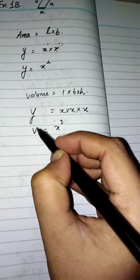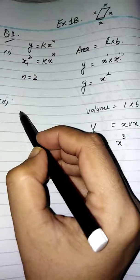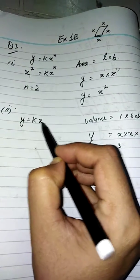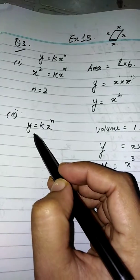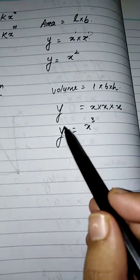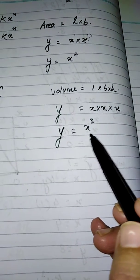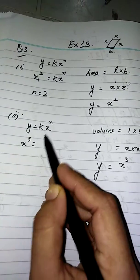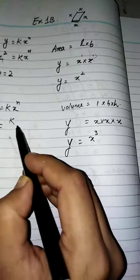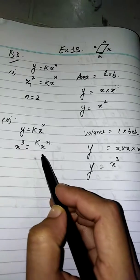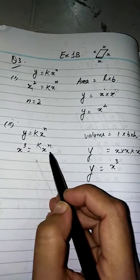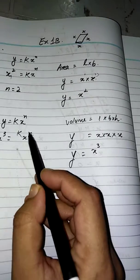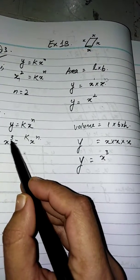The volume is denoted by y, so we write y equals kx^n. Since the volume equals x³, we substitute x³ for y, giving x³ equals kx^n. Applying the same rule — same variables on both sides have equal powers — the power on the left is 3 and on the right is n, so n equals 3.